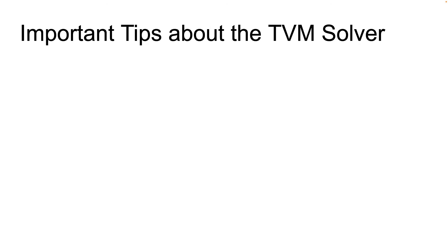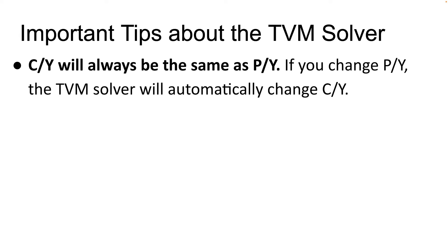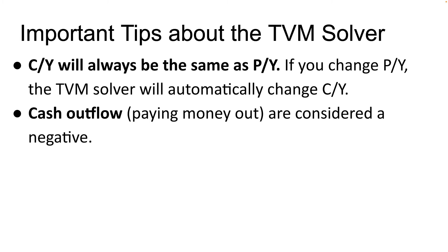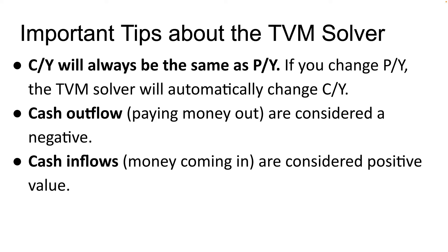Now let me talk about a few important tips about the TVM solver. First, CY will always be the same as PY, so the number of compounding periods will always be the same as the number of payment periods. You'll notice that if you change the value of PY, the TVM solver will automatically change the value of CY. Cash flow out is when you're paying money out — these are considered negative with the TVM solver. Cash inflows, which are money coming in, are considered a positive value.